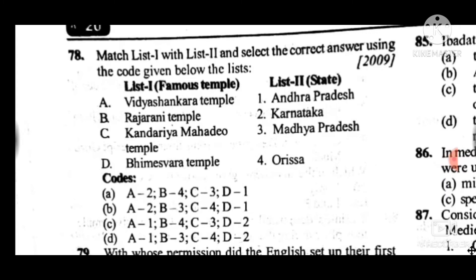Question 78: Match list 2 with list 1 — famous temples and their states. Answer to question 78 is A. Vijaya Sankara Temple is in Karnataka; Raja Rani Temple is in Odisha; Kandariya Mahadeva Temple is in Madhya Pradesh; and Vimala Svami Temple is in Andhra Pradesh.